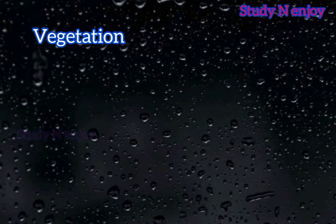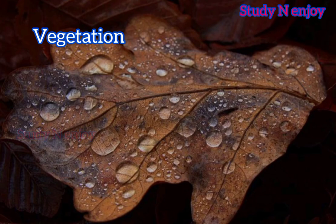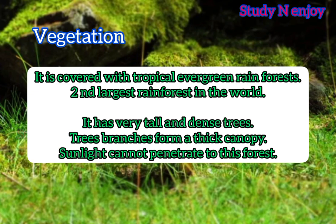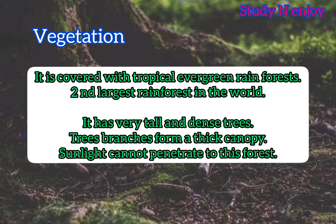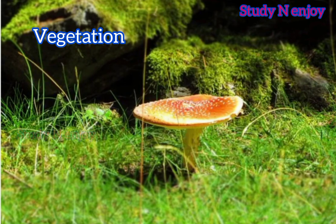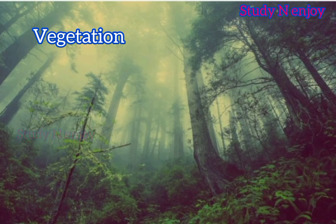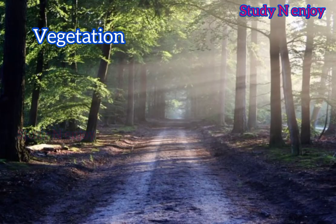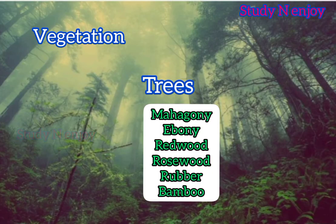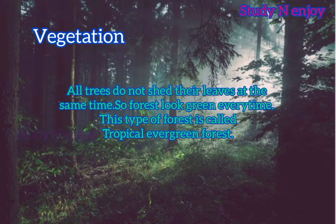The DRC is rich in vegetation. Most of the DRC is covered with tropical evergreen rainforest. These rainforests are the second largest and one of the thickest in the world. These forests have very tall and dense trees whose branches form a thick canopy; even sunlight cannot penetrate through these forests, so they remain dark and dim even in the daytime. The hot and humid climate is ideal for the growth of these dense forests. Common trees include mahogany, ebony, redwood, rosewood, rubber, and bamboo. All trees do not shed their leaves at the same time, so the forest looks green throughout the year — that is why it is called tropical evergreen forest.